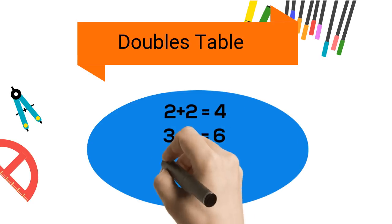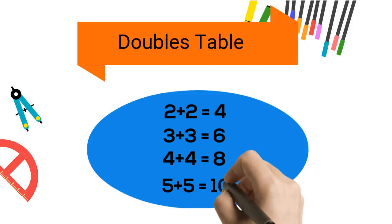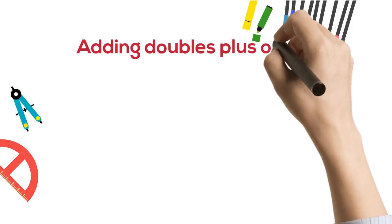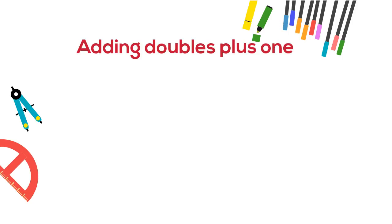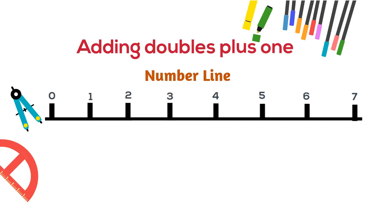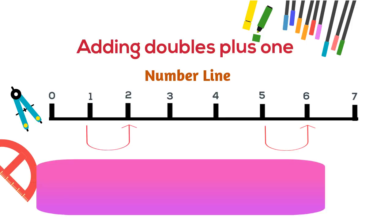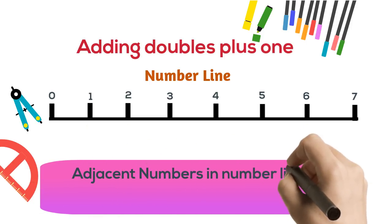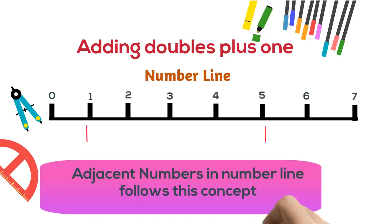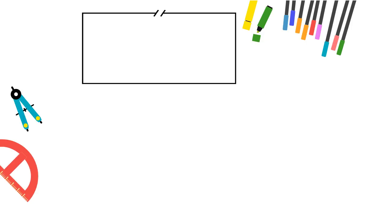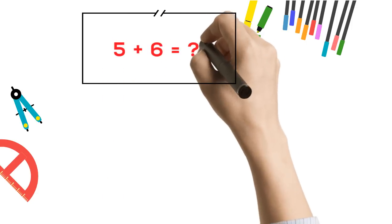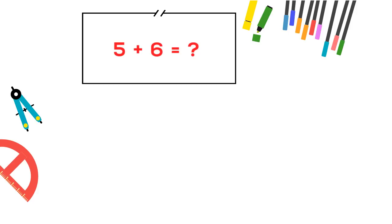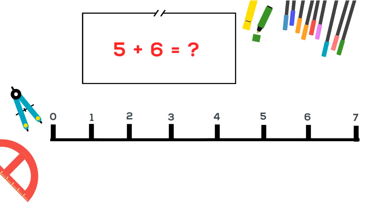The link is in my description box below. Now let's jump on today's concept: double plus one. We can apply this method when we need to add two numbers that come one after the other in the number line. Suppose we have two numbers to add like 5 plus 6. Here, after 5, 6 comes in the number line, so we can apply this method.